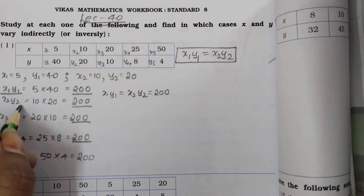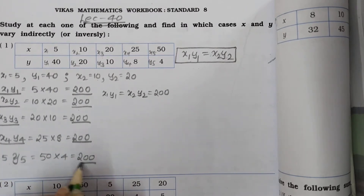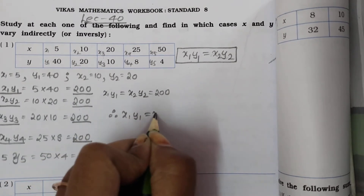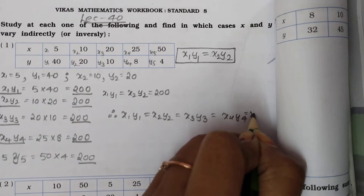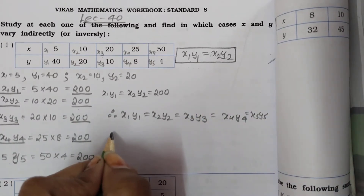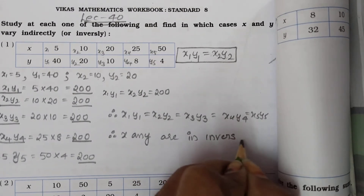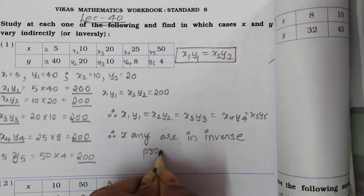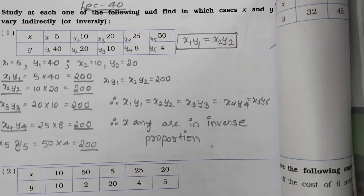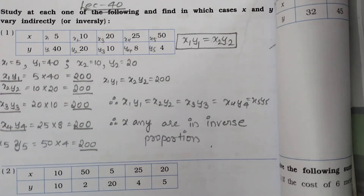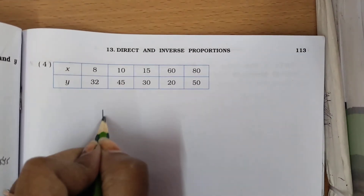तो देखिए: x1y1 = 200, x2y2 = 200, x3y3 = 200, x4y4 = 200, x5y5 = 200 — सारी values equal हैं। Therefore, x and y are in inverse proportion. अगर इनमें से कोई भी एक value not equal आती, तो हम कहते it is not in inverse proportion। इस तरह से आपको question number 4 पूरा complete करना है — there are totally four questions, it's your homework।